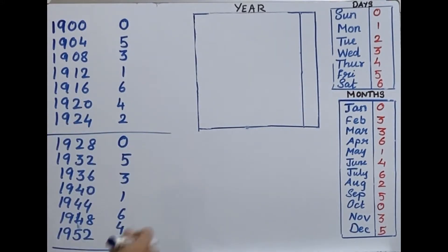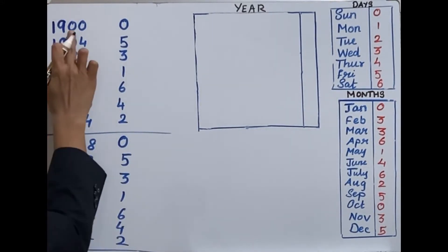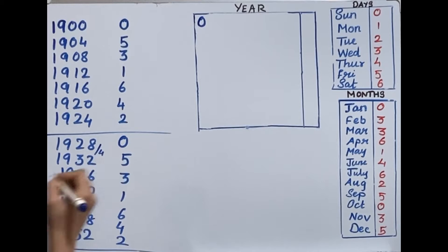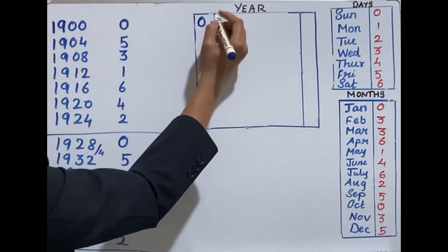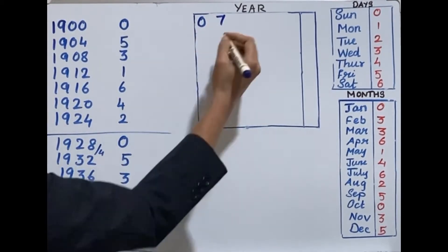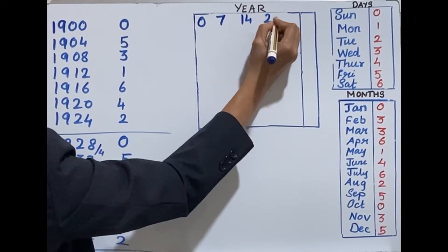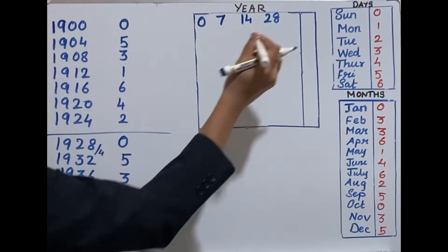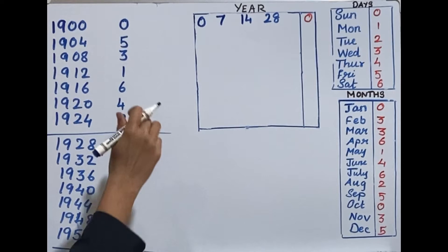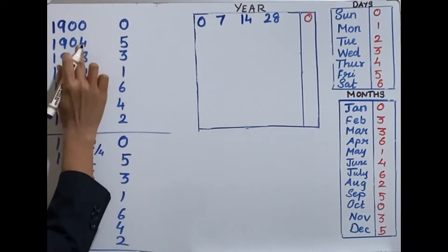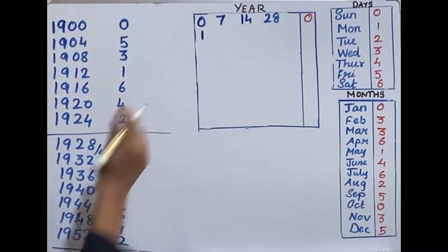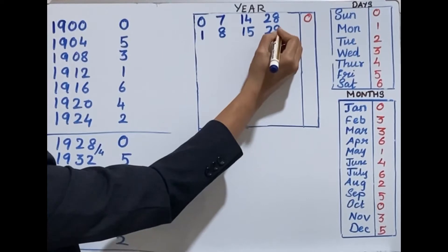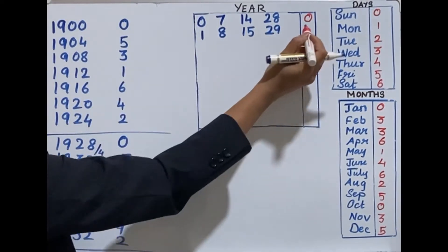For the year table, take the last two digits of the year and divide by 4. If the last two digits are 0, 7, 14, or 28, the corresponding value is 0. If the quotient when dividing by 4 is 2, 9, 16, or 30, then the corresponding value is 3.